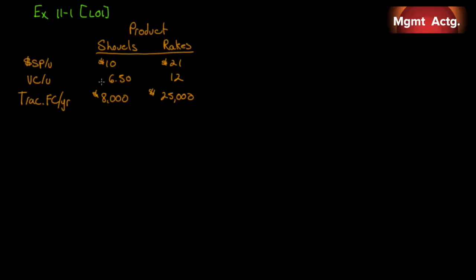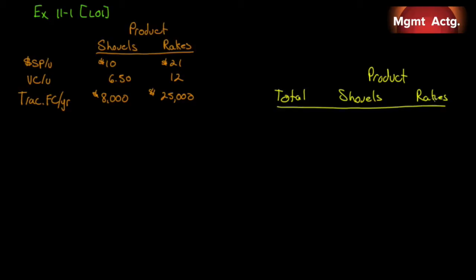We need to prepare a contribution format income statement segmented by product lines. Let's get our format down: we have shovels, rakes, and a total column. For sales, we sold 3,500 shovels at $10 each, giving us $35,000 in shovel revenue. We sold 5,000 rakes at $21 each, giving us $105,000 in rake revenue, for a total of $140,000.